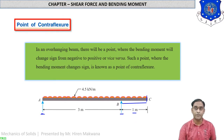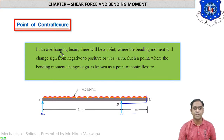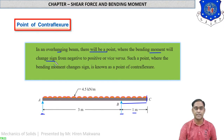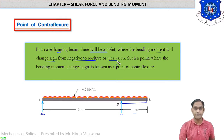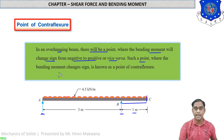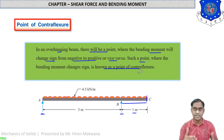What is the point of contraflexure? The point of contraflexure exists in bending moment diagrams only. In an overhanging beam there will be a point where the bending moment will change sign from negative to positive or vice versa. When the bending moment changes sign, that particular point in the bending moment diagram is known as the point of contraflexure. So this is the new topic in which we have to find the point of contraflexure in the bending moment diagram.